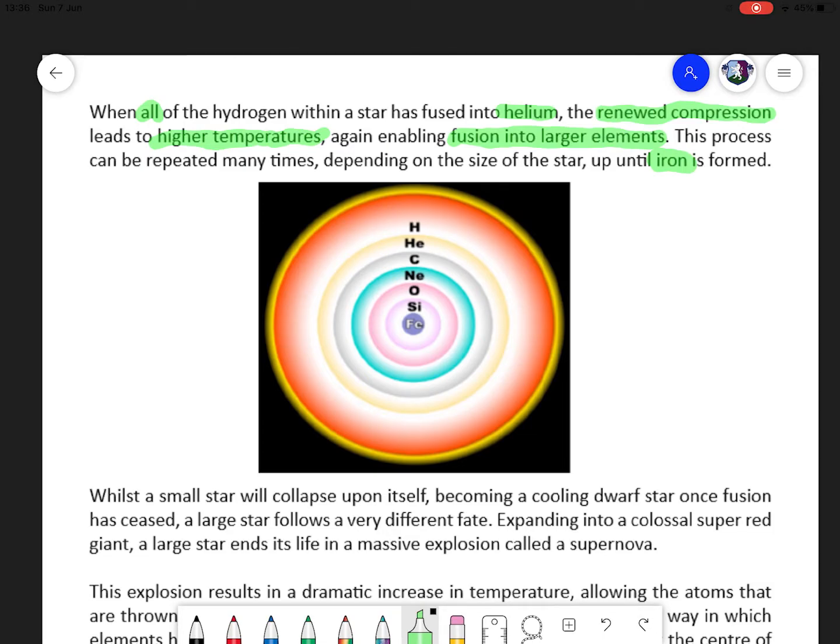The star will reach its limit at that point, and that's only the most massive stars. Many don't get anywhere near that level, they'll stop much sooner in the fusion process. But we sort of get this onion structure. As it's plasma it's not going to be fixed in these layers, but that gives you an idea of the percentages of each element present.